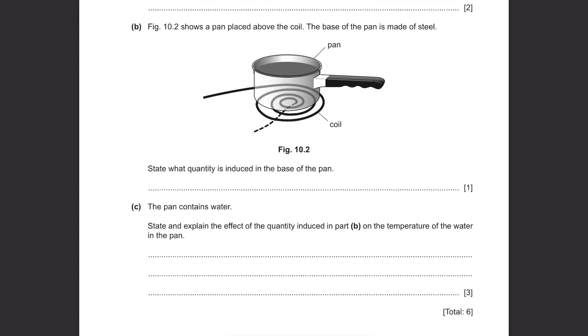Part B. Figure 10.2 shows a pan placed above the coil. The base of the pan is made of steel. State what quantity is induced in the base of the pan. This is an induction cooker. To make this work, EMF is induced in the base of the pan. Part C. The pan contains water. State and explain the effect of the quantity induced in part B on the temperature of the water in the pan. When EMF is induced at the base of the pan, current will start flowing there, so thermal energy will be carried with the current to the base of the pan and thus the temperature will be increased.